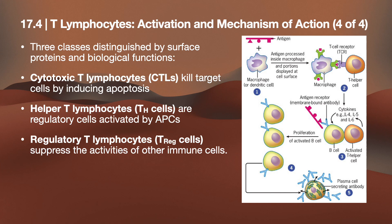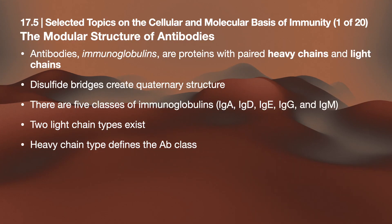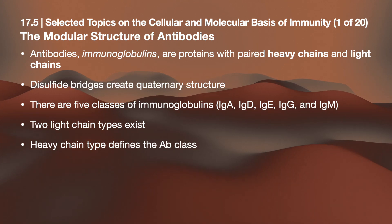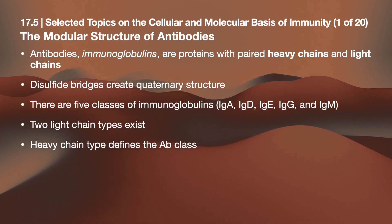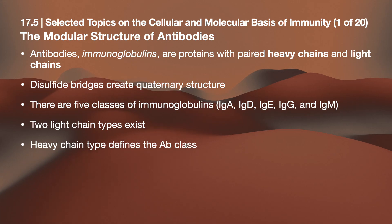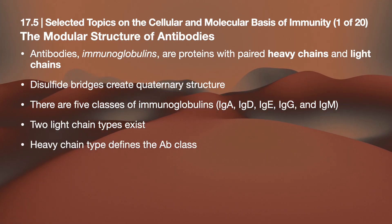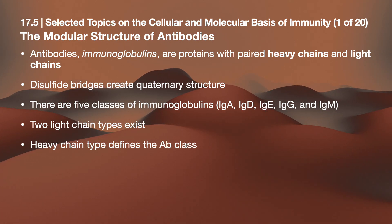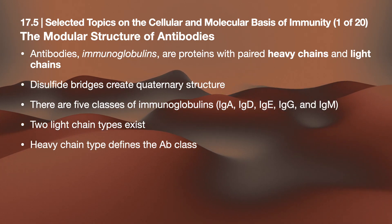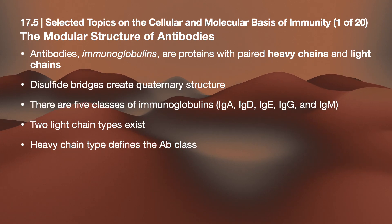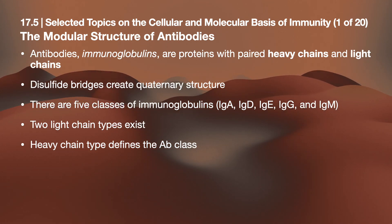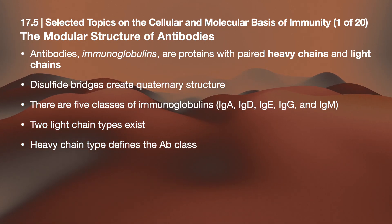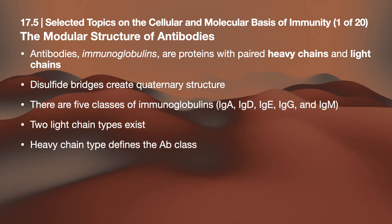Moving forward to the modular structure of antibodies: antibodies, or immunoglobulins, are proteins with paired heavy chains and light chains, formed with disulfide bridges creating a quaternary structure. There are five classes of immunoglobulins — IgA, IgD, IgE, IgG, and IgM. There are two light chain types, and the heavy chain type defines the antibody class.